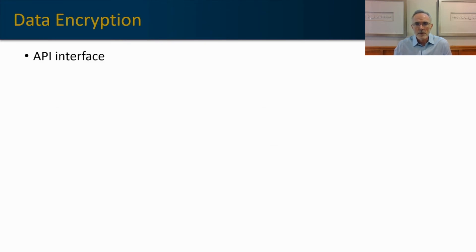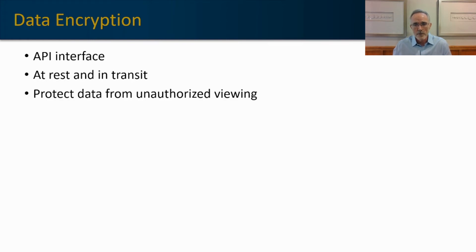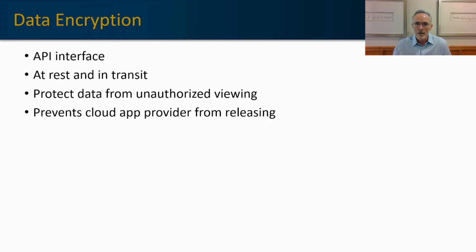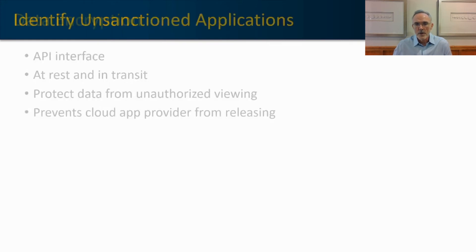There's an individual use case around data encryption that's really important. If your CASB has an API interface into a cloud application, you can frequently provide independent encryption of your data within that cloud environment — rather than using the cloud service provider's encryption tools. This prevents the cloud service provider from ever viewing your information, and it also prevents them from accessing that information and potentially delivering it to a third party under a subpoena or warrant. You can protect yourself by encrypting your data both at rest and in transit with a cloud access security broker encryption algorithm.